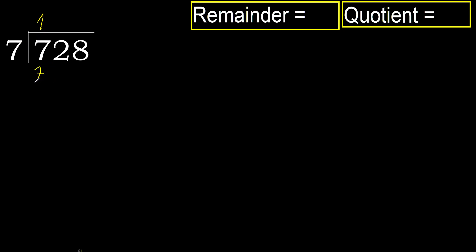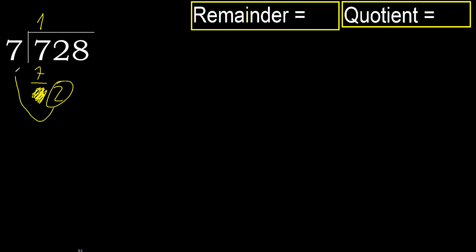7 is not greater. Subtract: 7 minus 7 equals 0. Bring down 2. 2 is less than 7, therefore go to next.